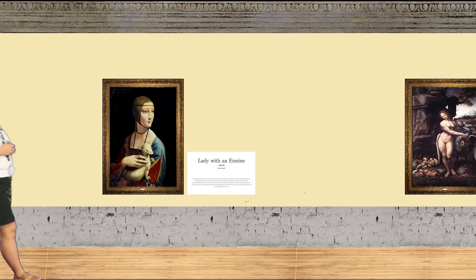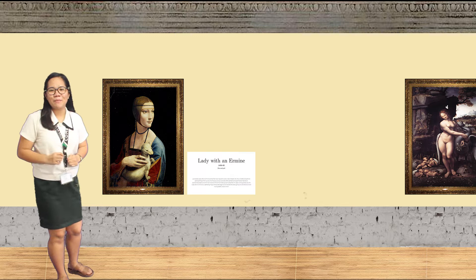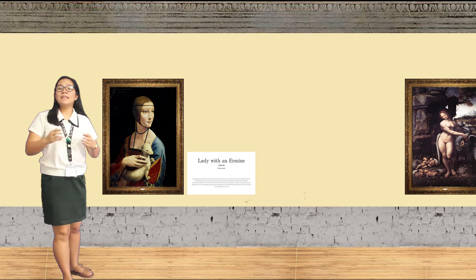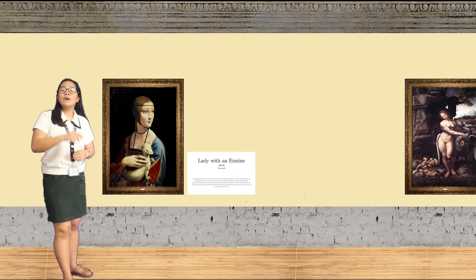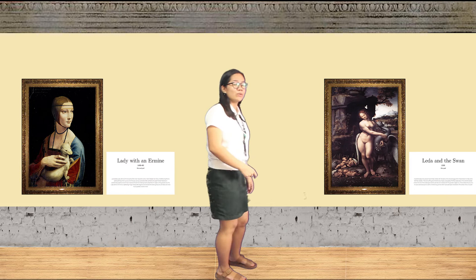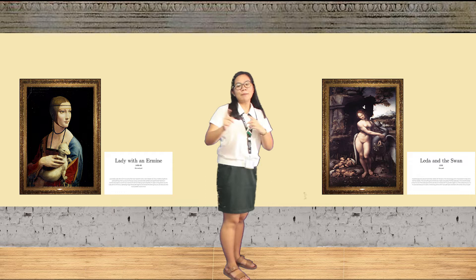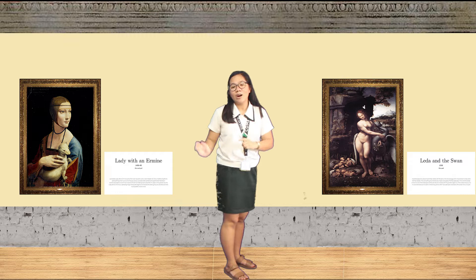The next painting is the Lady with an Ermine. The medium used is oil on wood panel. The subject has been identified with reasonable certainty as Cecilia Gallerani, who was the mistress of Leonardo's employer. The next painting is Leda and the Swan. The medium used is oil on paper. It is a standing picture of Leda almost naked with a swan.